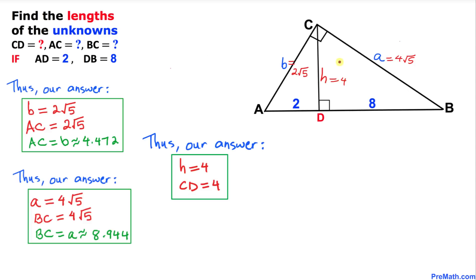And here are our final values: b equals 2 root 5, a equals 4 root 5, and H equals 4. Thanks for watching and please don't forget to subscribe to my channel for more exciting videos. Bye.